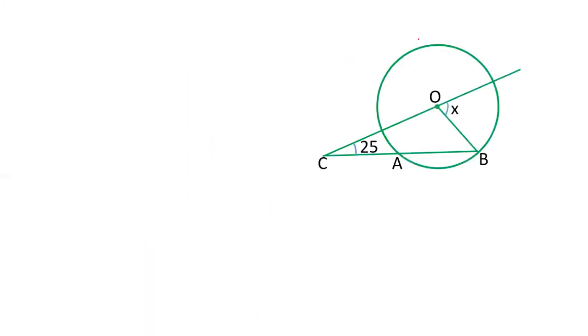So let's see how we'll solve this question. We have taken this point as D. To solve this question, first of all draw OA. Now it is given that AC equals OB. OB is radius, OA is also a radius. OA and OB are equal.